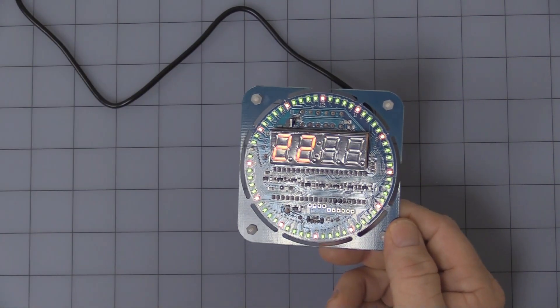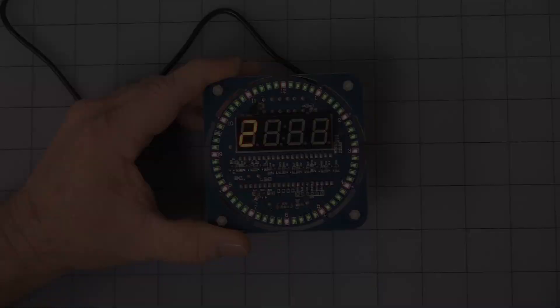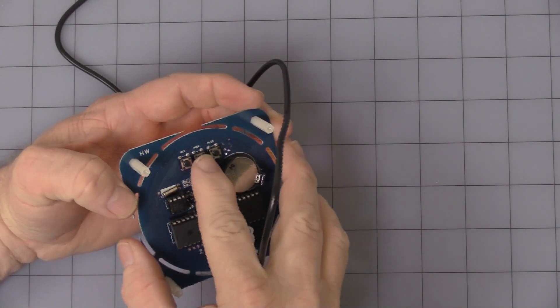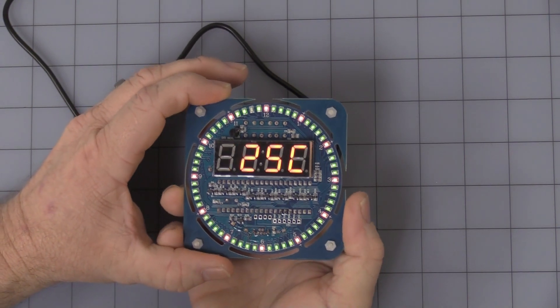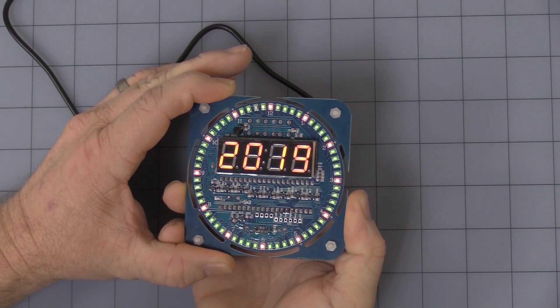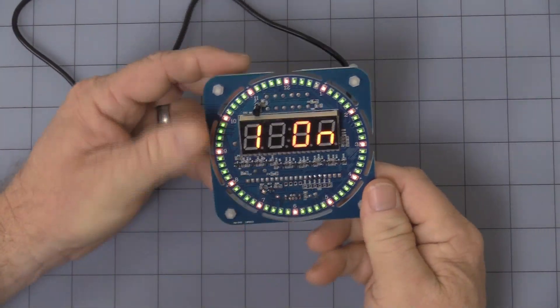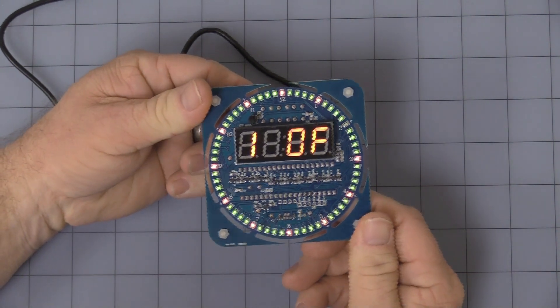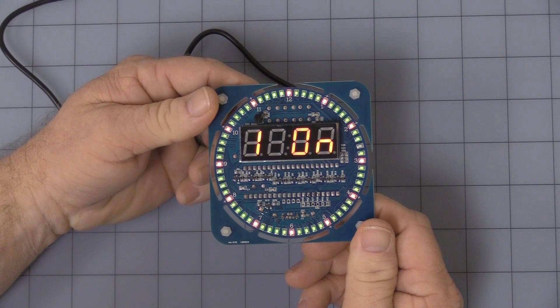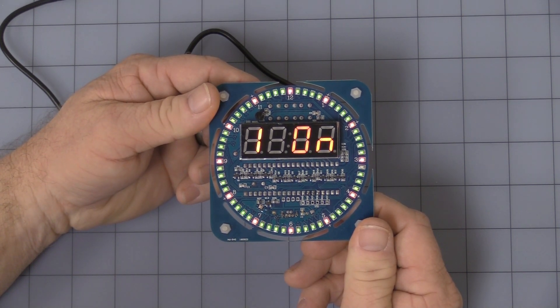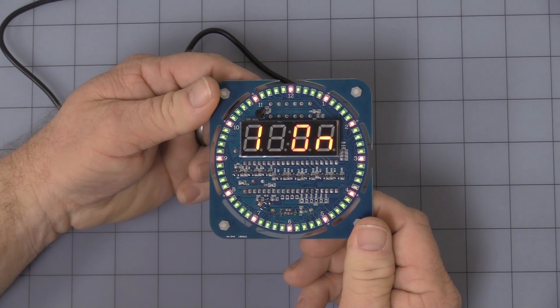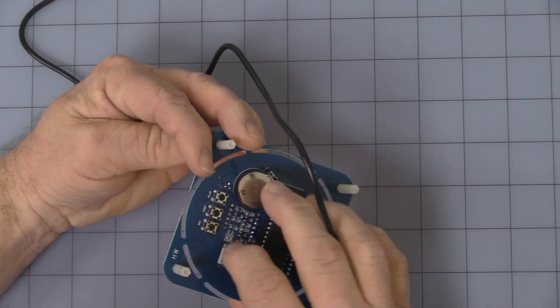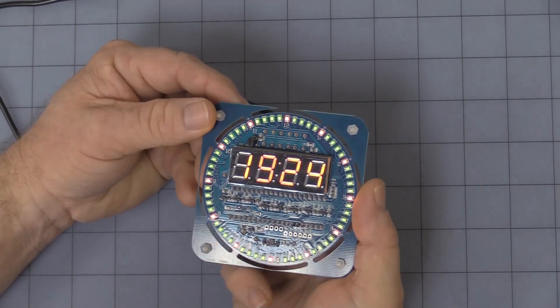Now for the alarm modes you press and hold the mode button. First, number one is the hourly chime. You can use the plus button to turn it off or on. It will chime every hour on the hour except from 2200 or 10 PM to 8 AM, so it doesn't bother you in the middle of the night. Leave it alone and it'll simply go back into regular operation mode.